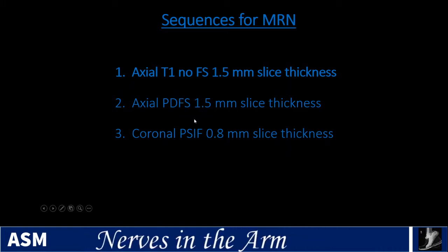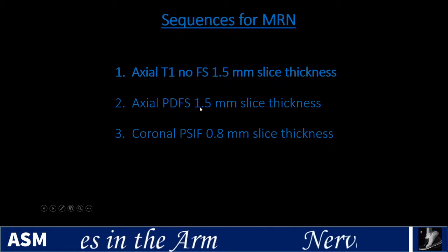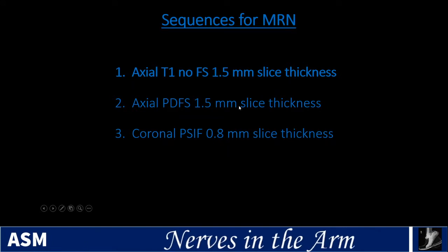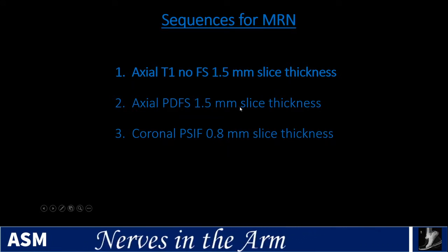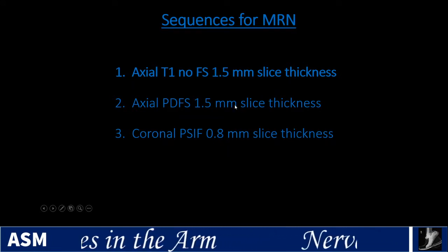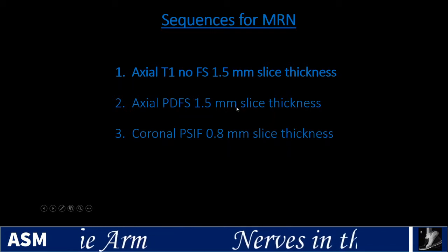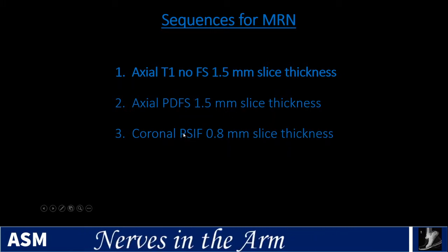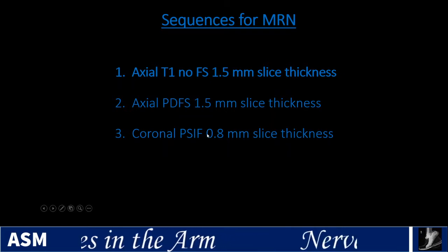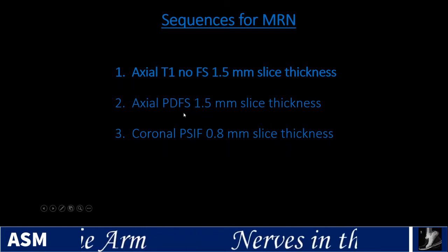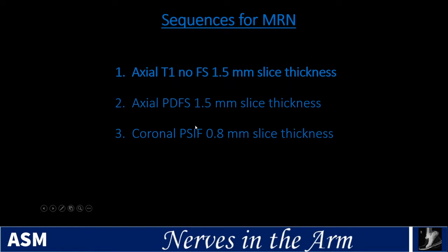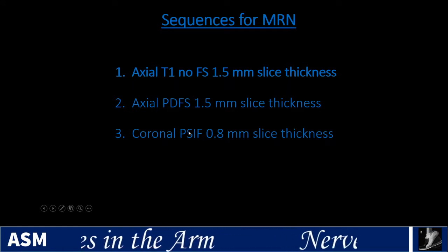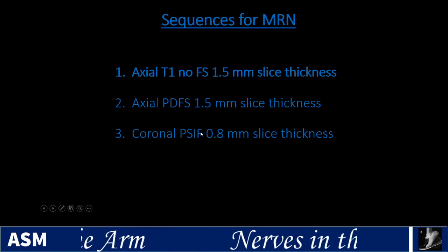Healthy nerves should be iso-intense to slightly hyper-intense with respect to muscle on PD fat sat. They should not be iso-intense or hyper-intense to vessels, which appear bright. When you start seeing a nerve that bright, something may be going on. The PSIF is a troubleshooting technique: small vessels that look bright on PD fat sat will typically turn black on PSIF, allowing us to differentiate small nerve branches from small vessels.